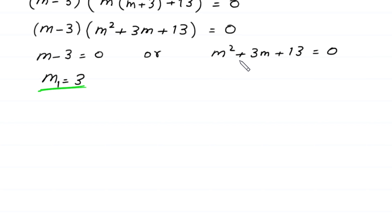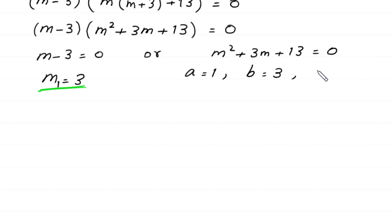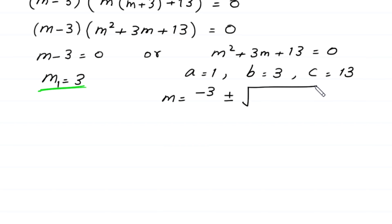To find the other two values, we solve the quadratic equation m squared plus 3m plus 13 equals 0. This is not factorable, so we use the quadratic formula. In this equation, a equals 1, b equals 3, and c equals 13. According to the quadratic formula, m equals negative 3 plus or minus the square root of b squared minus 4ac, all divided by 2a.